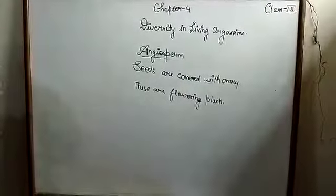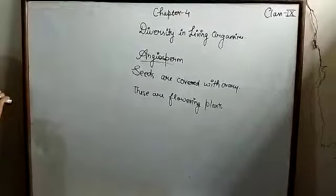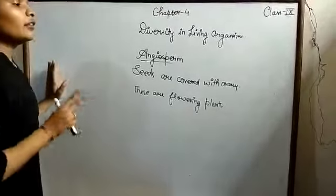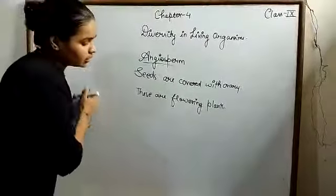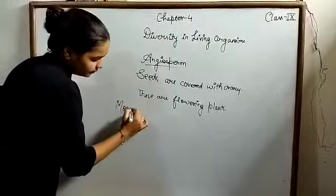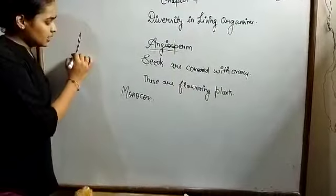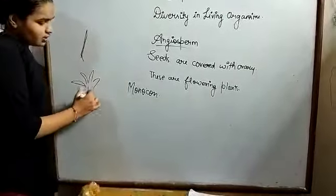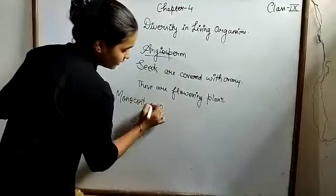Monocot has a single cotyledon present. If we have two cotyledons present, we have dicot.